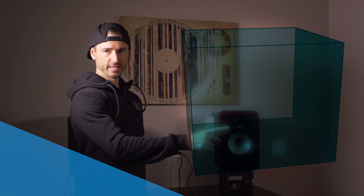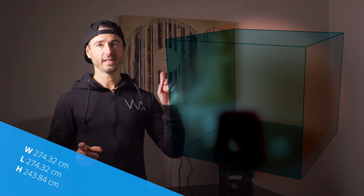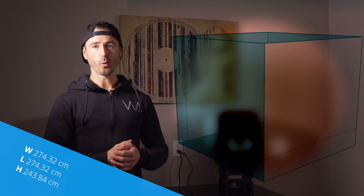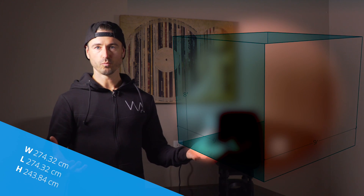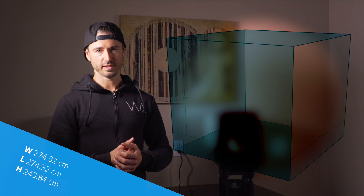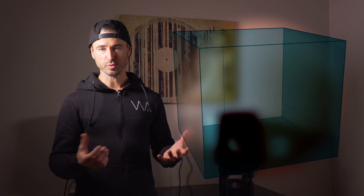Alright guys, so here we are in our test room. This room is virtually a perfect cube — it's nine feet wide by nine feet long by eight feet tall. Usually you would avoid working in a studio shaped like this, but the purpose of this video is to show you how to overcome the common problems you get in a typical room. This is kind of a typical bedroom, so we're going to work with what we have.